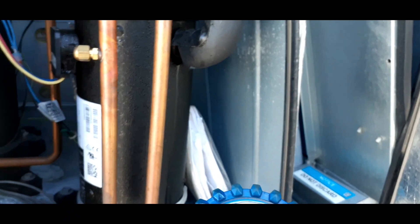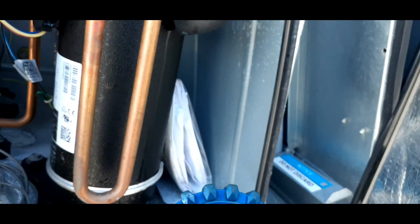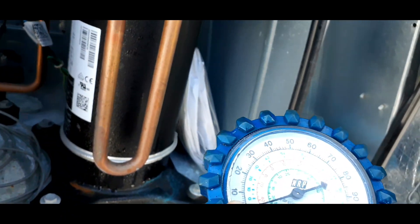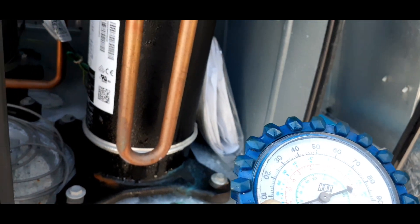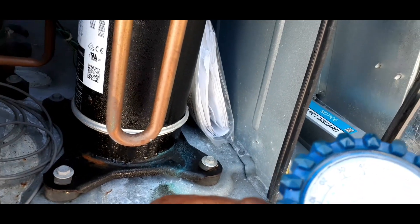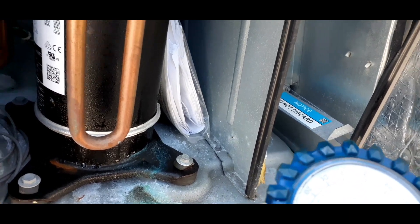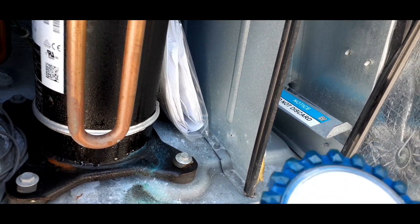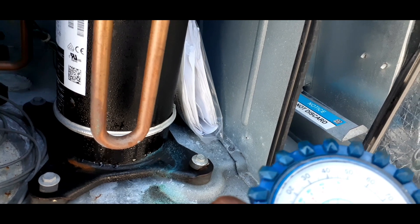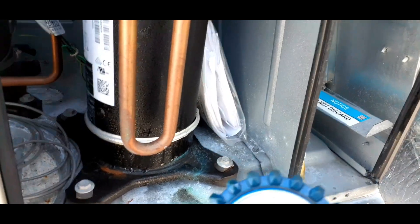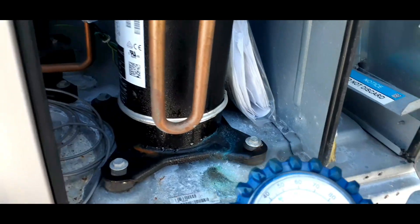I kind of use this for refrigeration a lot of times to check. Self contains, this is not a 410A gauge, but this unit is 410A. I like keeping this one in my tube bag because it goes increments of one. So one, two, three, four, five all the way up to ten. So I like the ones that goes in increments of one when I'm checking like my suction pressure when I'm working on refrigeration cases.